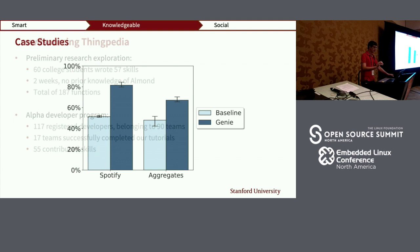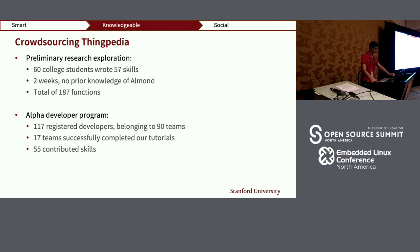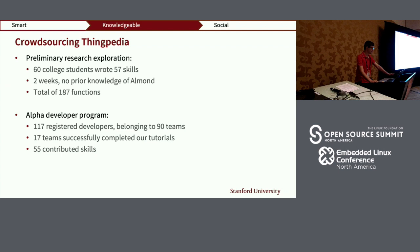We have applied this and started crowdsourcing Thingpedia. Preliminary research exploration started with 60 college students who brought 57 skills as part of their homework — given two weeks and no prior knowledge of Almond, they still succeeded and contributed 187 functions. Out of that, we started a developer program: we now have 117 registered developers belonging to 90 teams, 17 teams have completed our tutorials, and in total they have contributed 55 skills to Thingpedia.